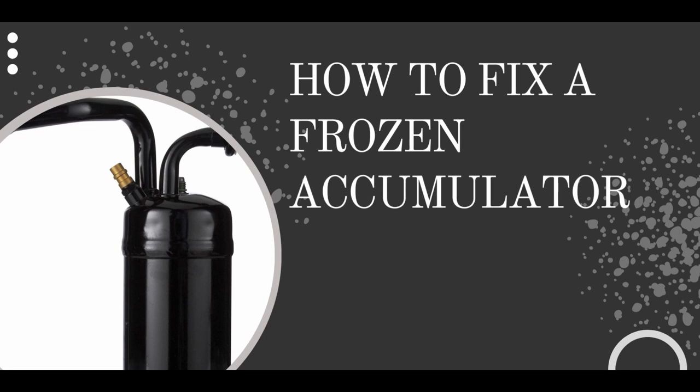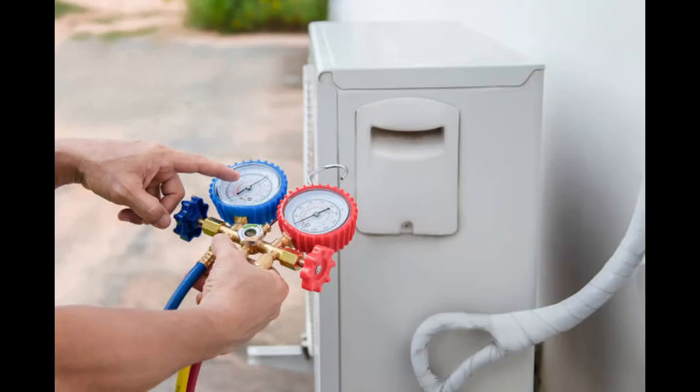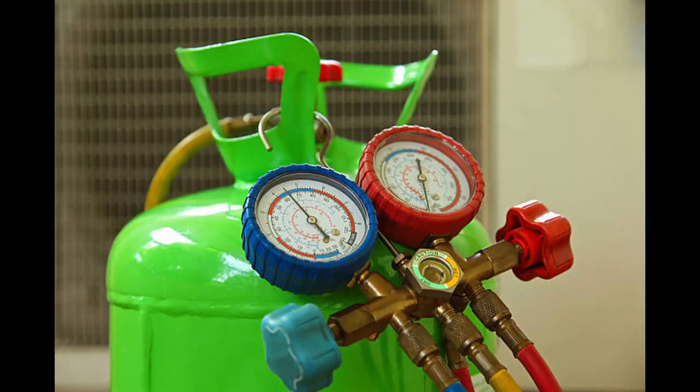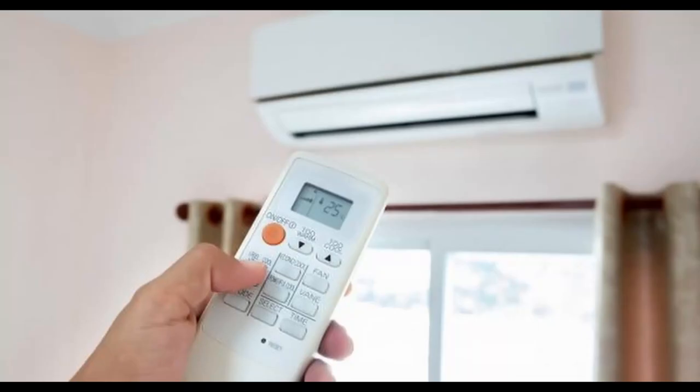How to fix a frozen accumulator? The first thing you need to do is check the level of refrigerant in your AC unit. If it's low, you'll need to add more. You can usually buy refrigerant at your local hardware store. Once you've added the refrigerant, turn on your AC unit and see if the problem has been fixed.